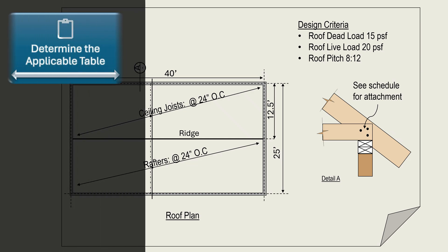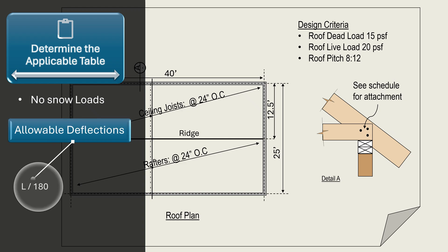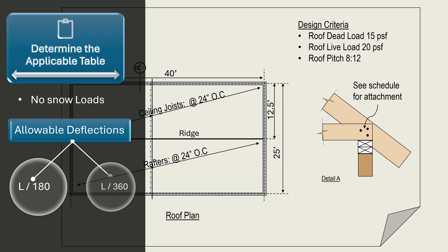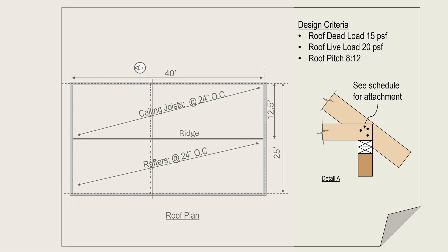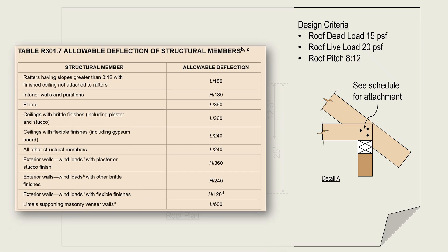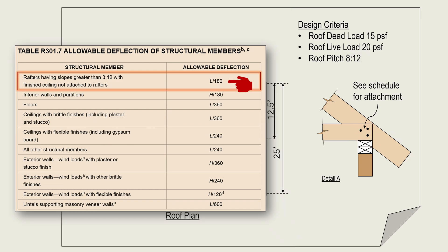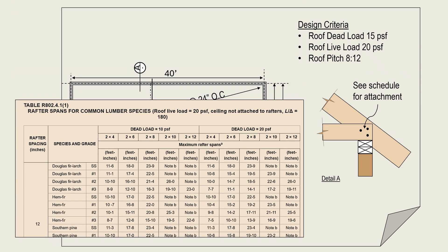The first step is to determine the applicable table to use among the eight rafter tables. Since there are no snow loads, we can eliminate six of the eight tables, leaving two. According to table R301.7, the allowable deflection for rafters having slopes greater than 3 to 12 with the finished ceiling not attached to the rafters is L over 180. Since the rafters in this project have a slope of 8 to 12 and are not directly attached to a ceiling, the allowable deflection is L over 180. Therefore, we will use table one in section R802.4.1 to size the rafters.